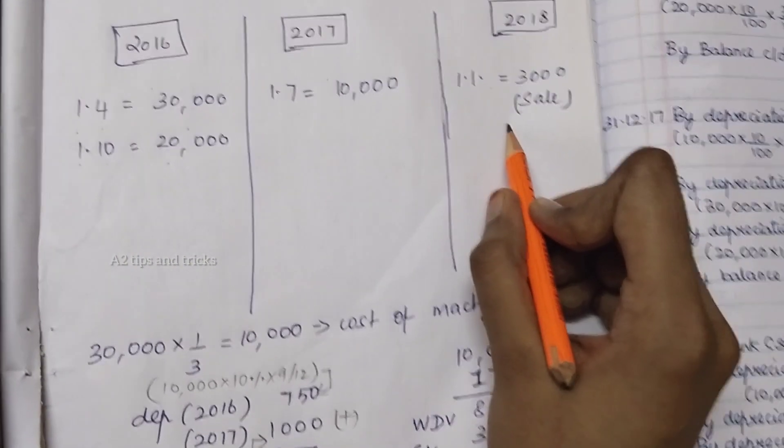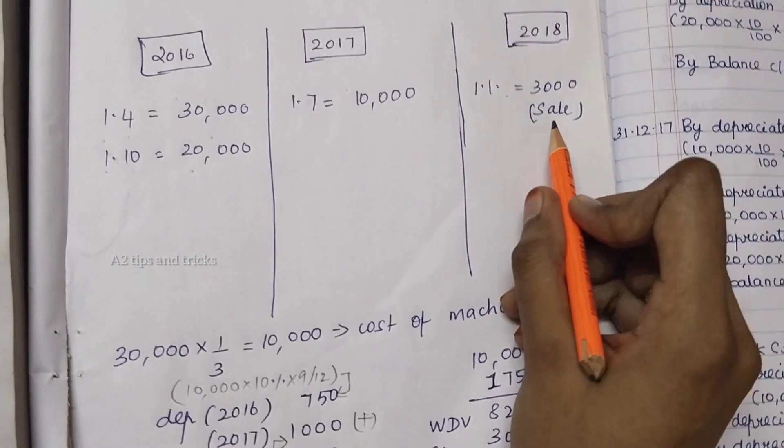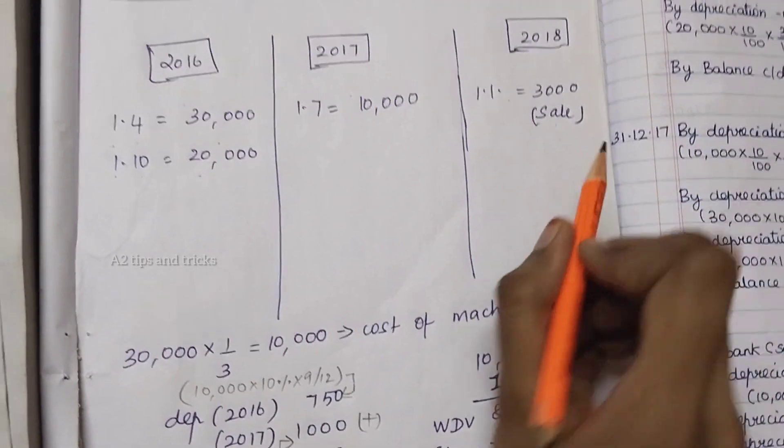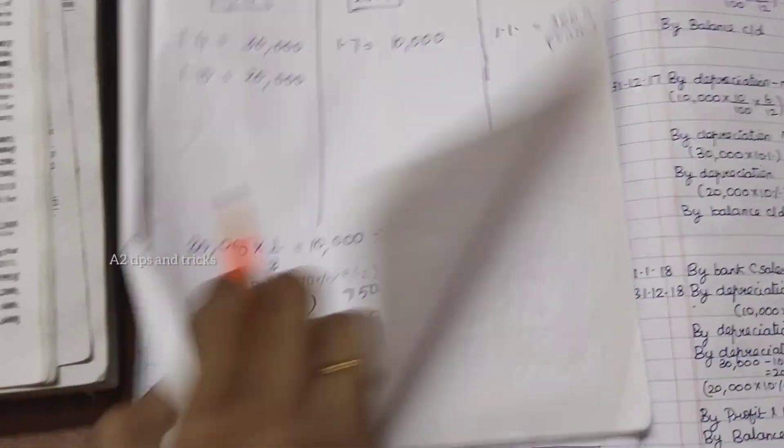In 2018, we have a sales value of 3,000. So let's go to the machinery account.